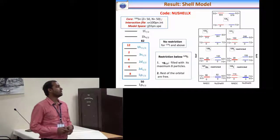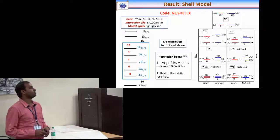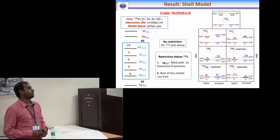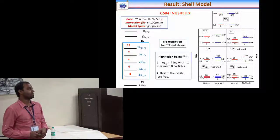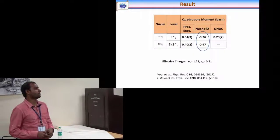We have performed similar calculation using NuShellX code with this interaction and we have compared with the excited states of 5 plus and 3 plus levels for all the isotopes and below 129 iodine we had to put one restriction in neutron G7 half orbitals.